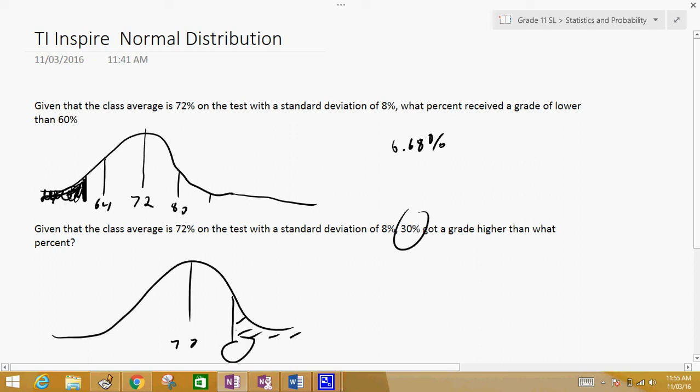So if we were to draw it, once again your mean is 72 and it says 30% got higher than some number. So we're trying to figure out what the number is this time. Before we were given the number 60 and we had to find the area. This time we're given the area and we have to find what the number is. Now the one thing about this, when you're using the calculator it only finds area to the left of the number. So if it tells you 30% got higher than a number, when you go to the calculator you need to account for this.